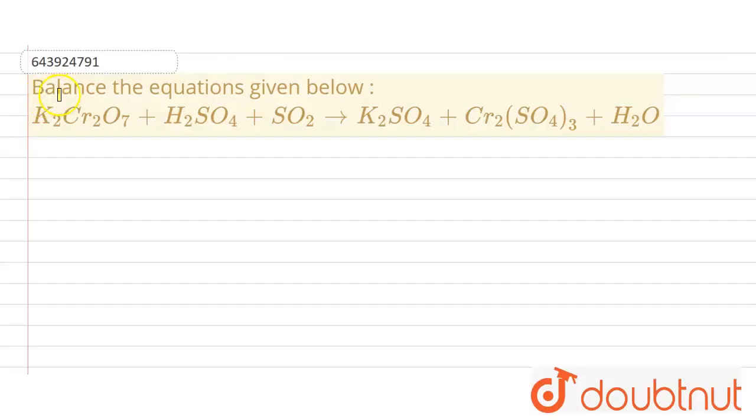In this question, we're asked to balance the equation given below. Here it is given that potassium dichromate on reaction with sulfuric acid and SO2, it produces potassium sulfate and chromium sulfate and also produces water.